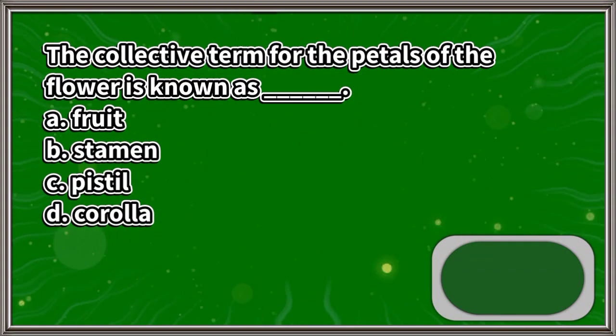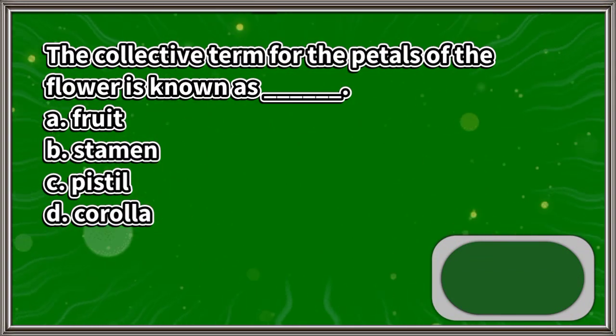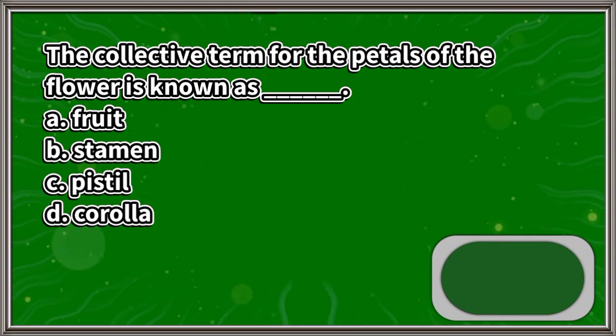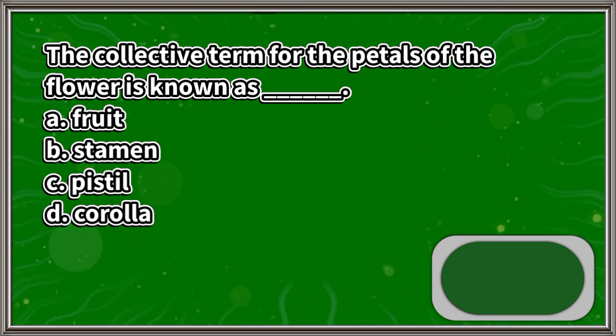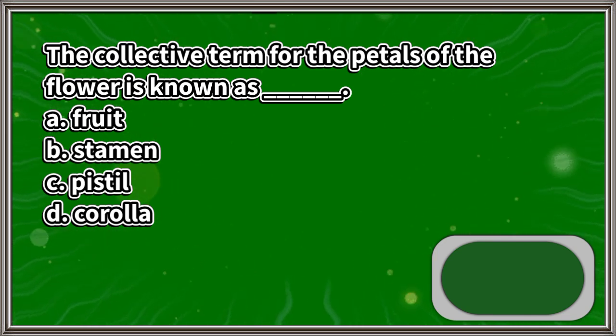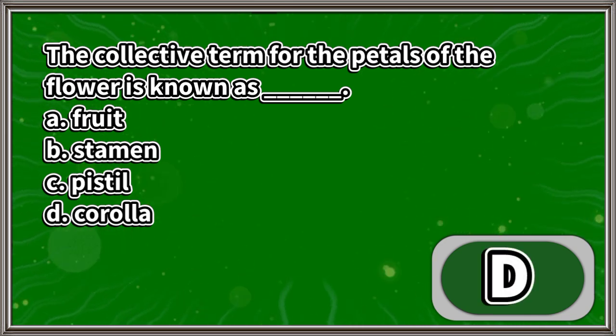The collective term for the petals of the flower is known as: A. Fruit, B. Stamen, C. Pistil, D. Corolla. The answer is letter D.